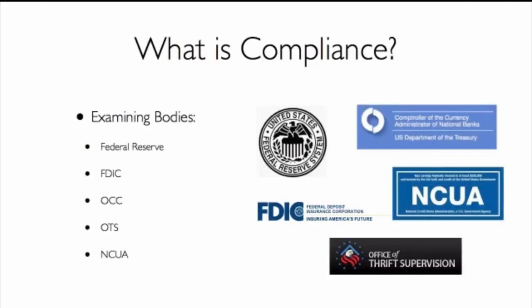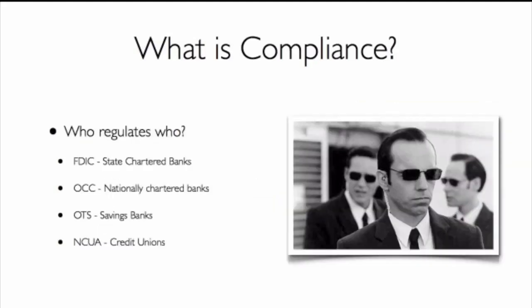Some of the regulatory bodies include the FDIC, the NCUA (which oversees credit unions), the Office of Thrift Supervision, the OCC, and the OTS. These are all regulatory bodies that oversee their various types of banks and credit unions to ensure they are compliant. The FDIC regulates state-chartered banks, the OCC reviews nationally chartered banks, and the National Credit Union Administration oversees credit unions.